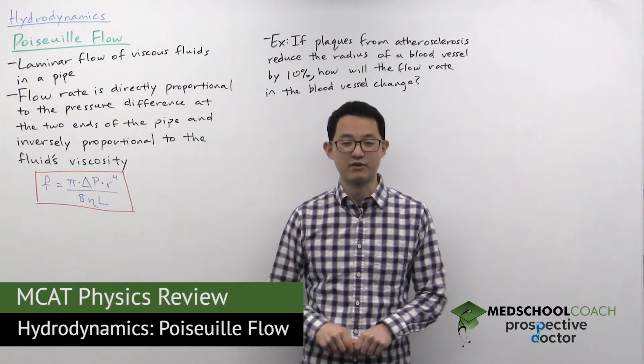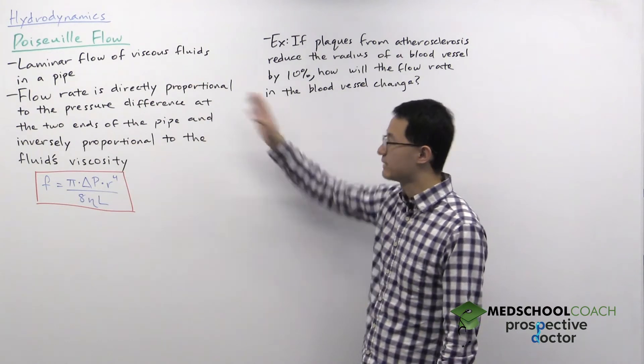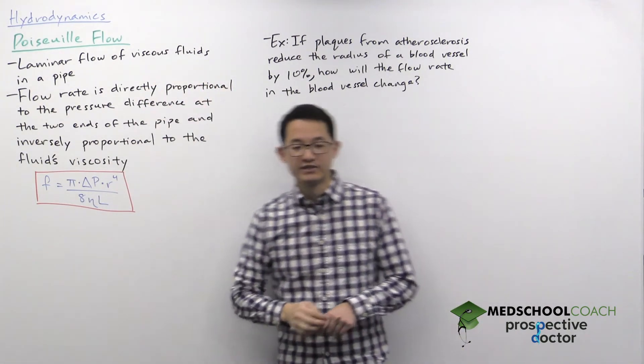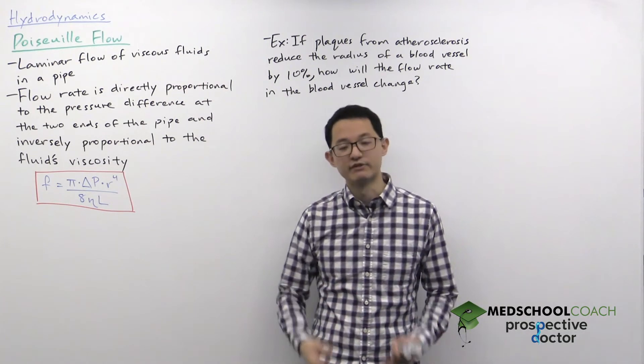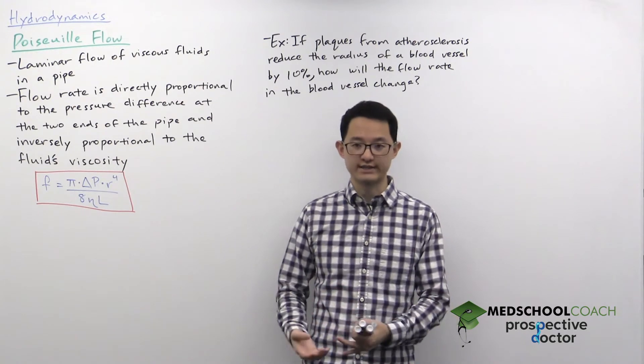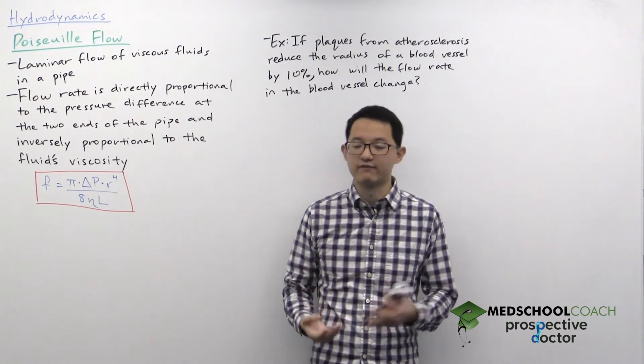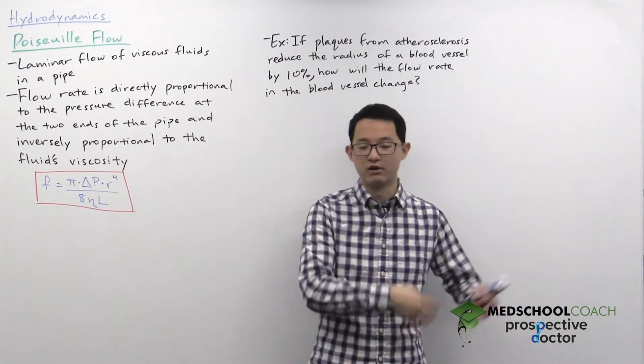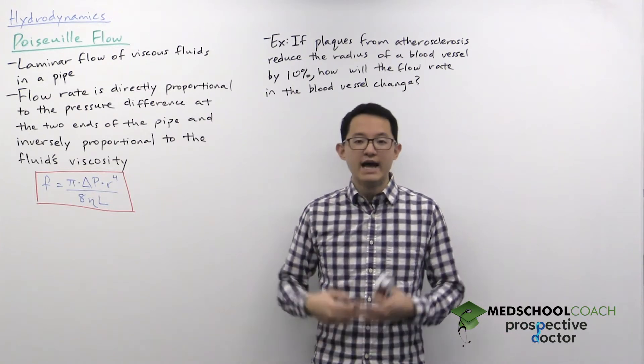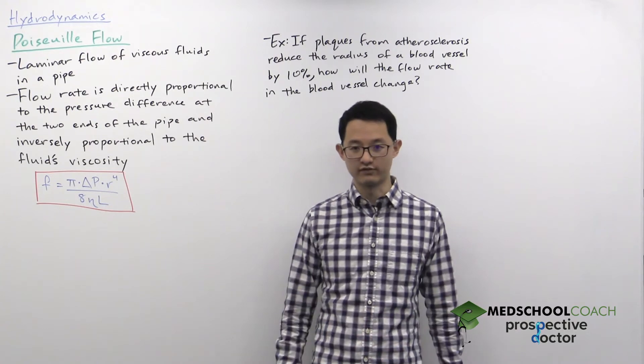In this video, we're going to go over Poiseuille flow. Poiseuille flow is the laminar flow of viscous fluids in a pipe. Before we weren't really focusing on viscosity. When we looked at ideal fluid flow, we said that was flow without viscosity. Now that we are looking at viscous fluids, instead of simply looking at fluids like water that are essentially not viscous, we're looking at fluids such as honey or blood that are viscous and have some resistance to fluid flow.